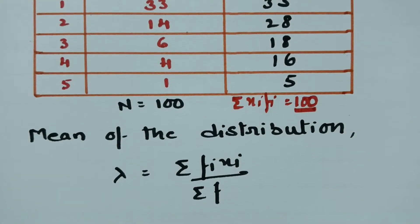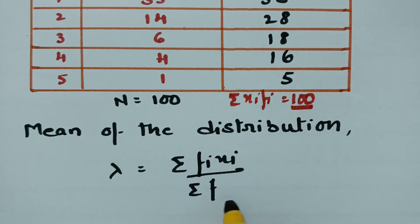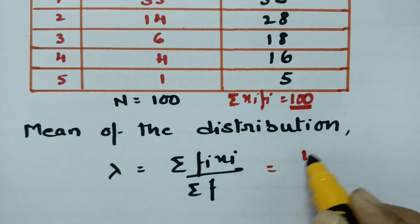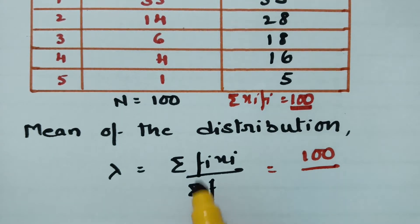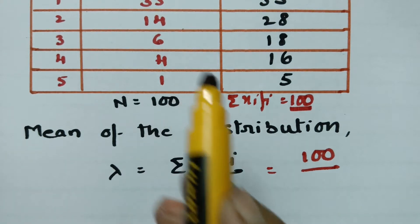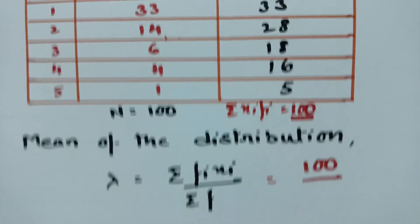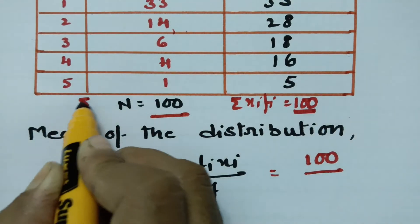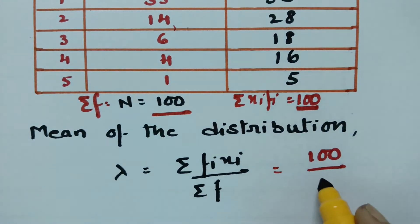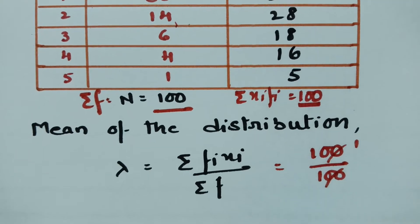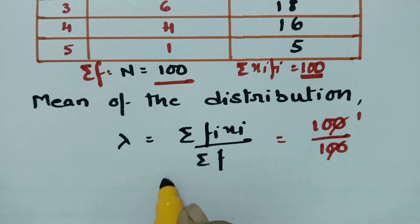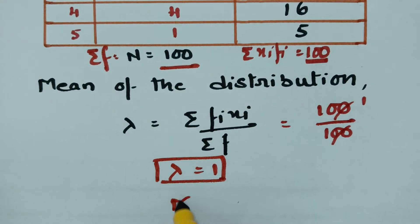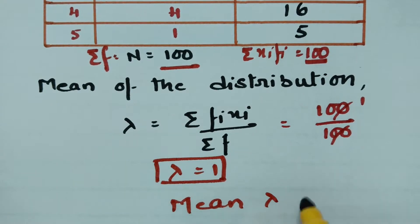For finding the mean of the distribution, we have lambda equal to sigma(fi·xi) divided by sigma(f). The total value of sigma(fi·xi) is 100, and the total frequencies sigma(f) is also 100. Therefore lambda is equal to 100 divided by 100, which is 1. So we got the mean of the distribution: lambda equals 1.